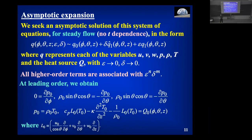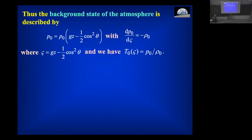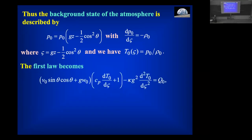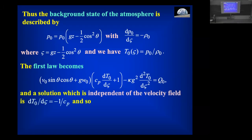At leading order, we now have the equations that describe the background state of the atmosphere. We can solve, independently of the first law, to obtain the solution — with a correction due to spherical geometry appearing automatically. The classical solution, which removes the velocity field at leading order, is the one we want here: it simply gives a linear reduction in temperature as you go upwards.